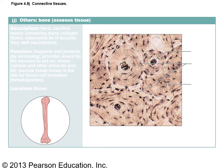The third group of connective tissue is bone, also called osseous tissue. There are two types: spongy bone and compact bone. Compact bone looks kind of like tree trunks stacked up. We're going to spend three chapters on bones and joints, so for now just know that bone is a category under connective tissue and that osteoblast is its cell type.